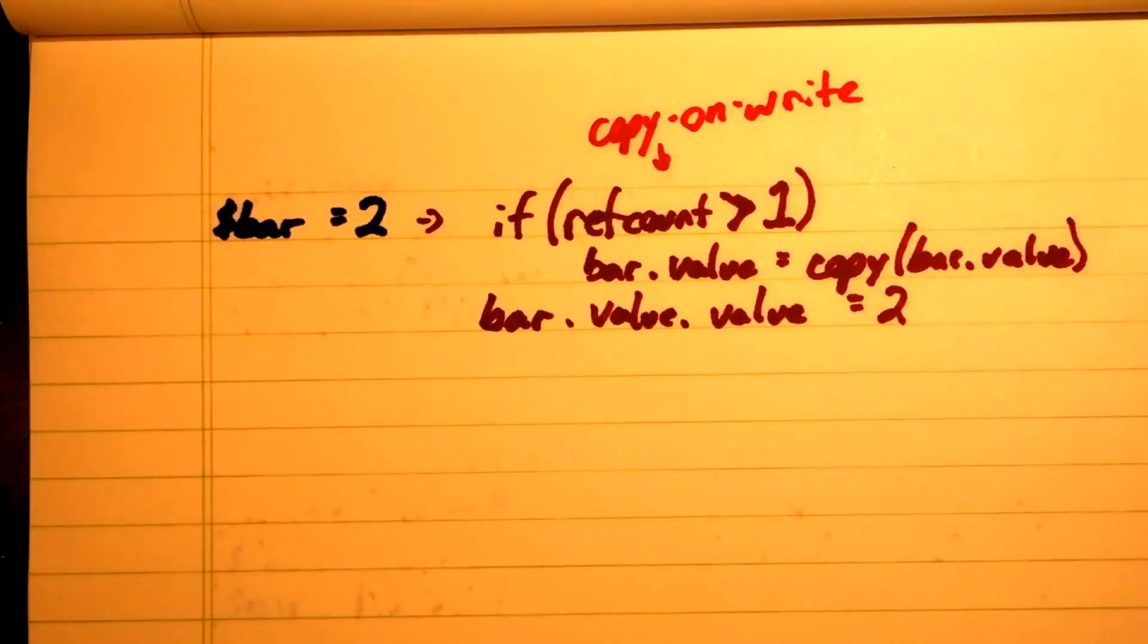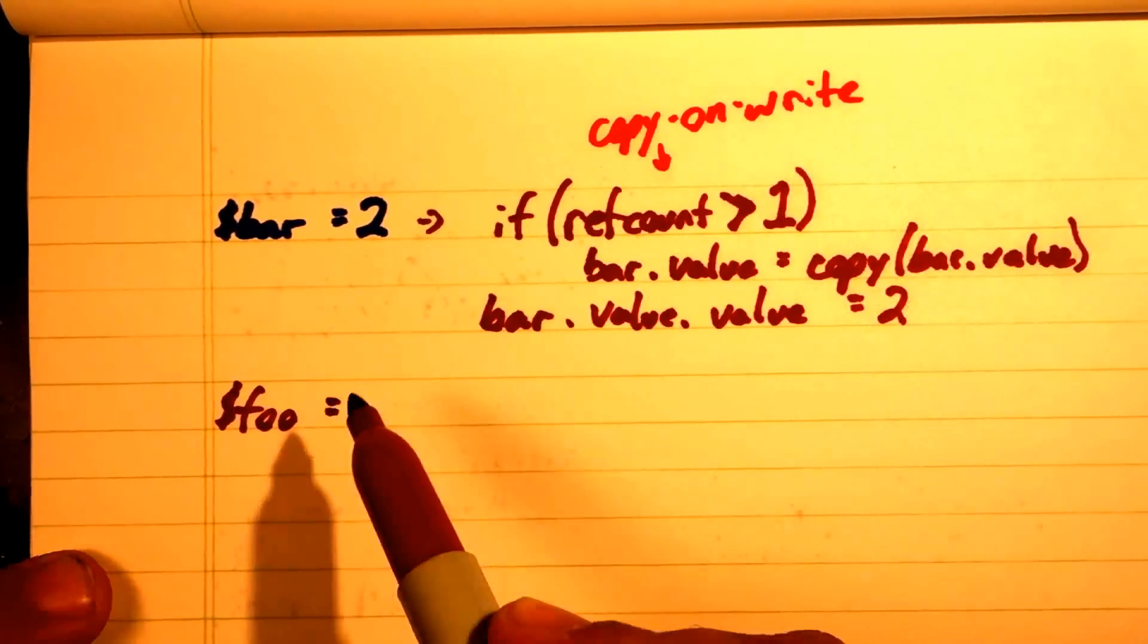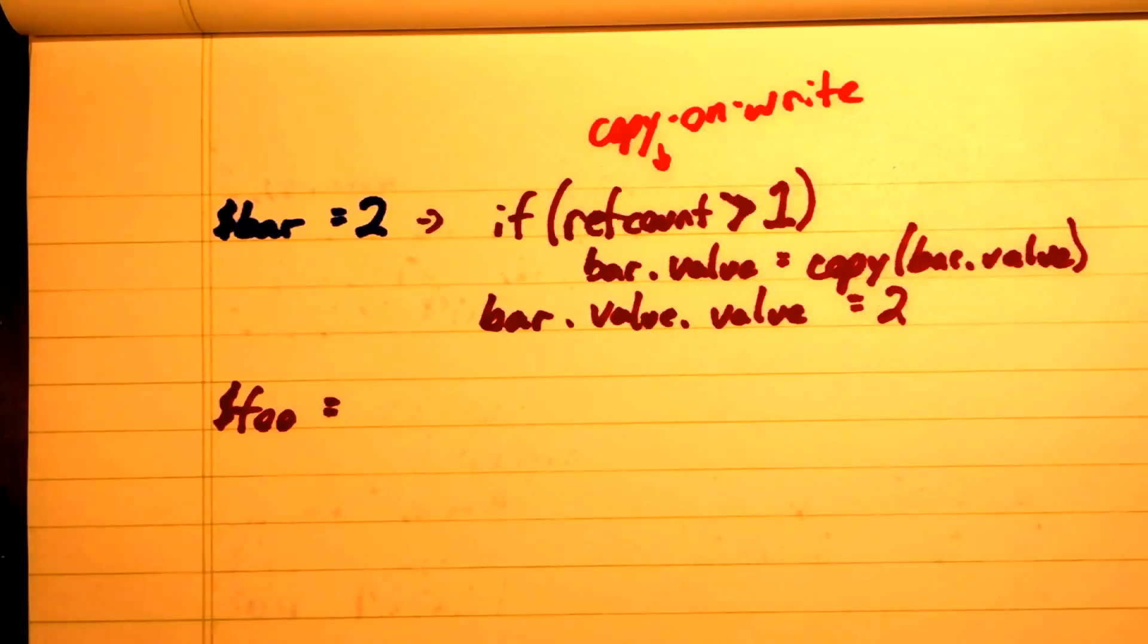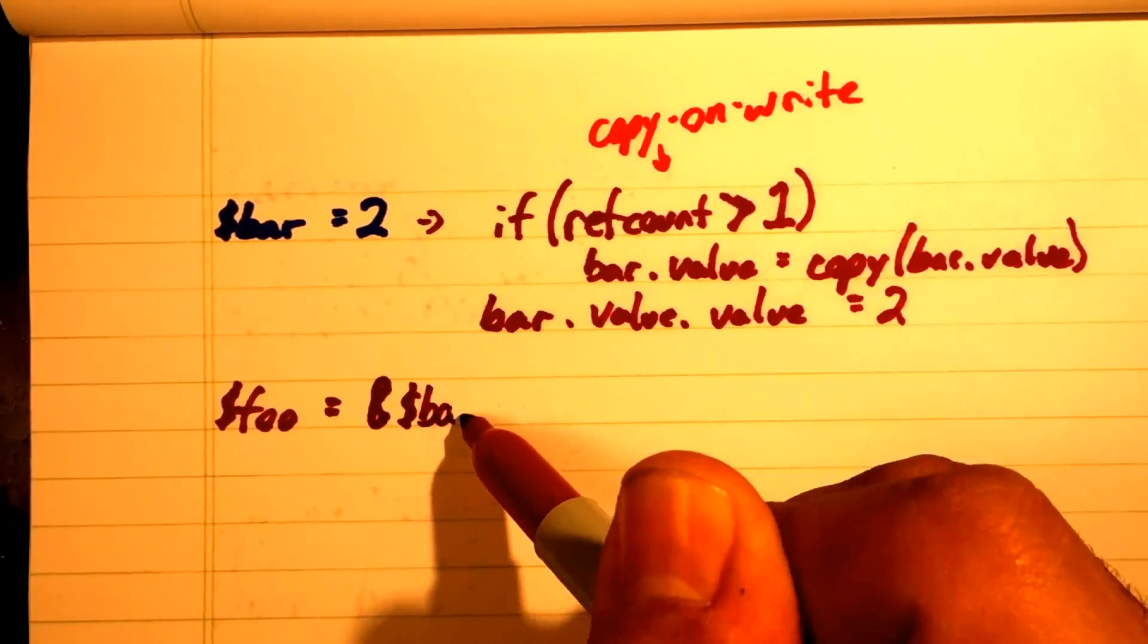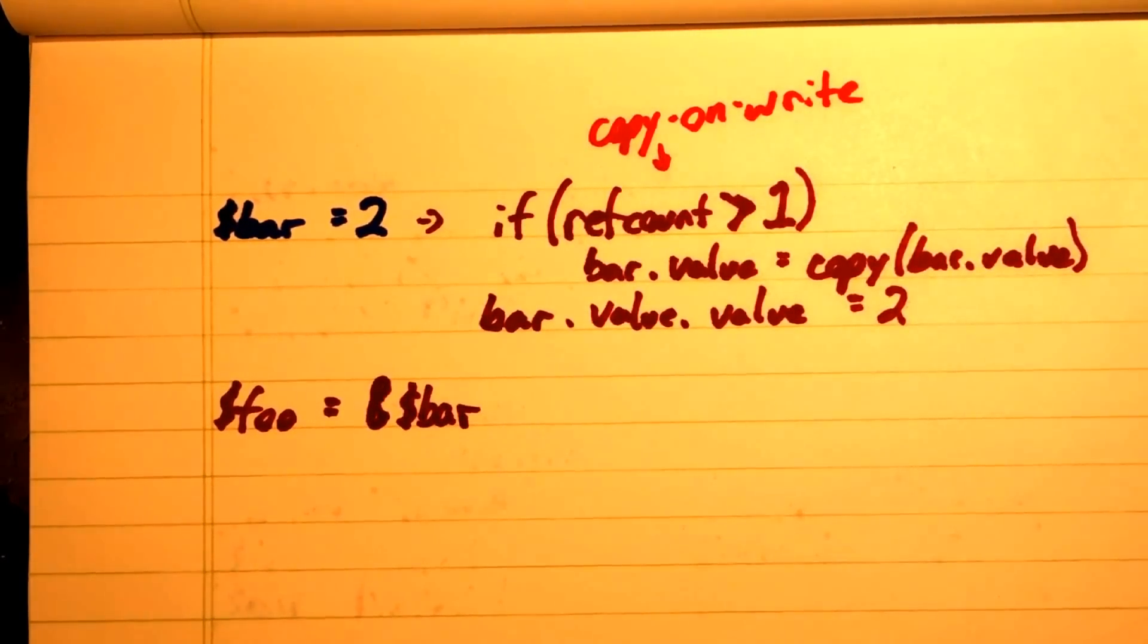So far, so good. Now, what happens when we want two variables to be edited together at the same time? In PHP, we would use the ampersand reference operator. But what is this doing under the hood?